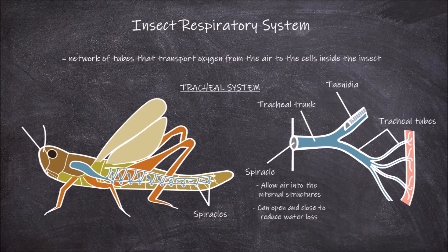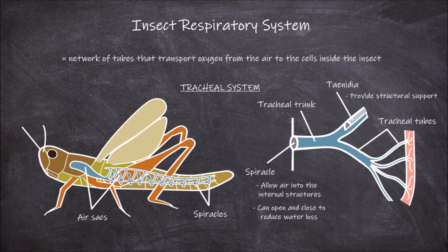The function of the taenidia is in providing structural support to the tracheal tubes to stop them from collapsing under the pressure of air moving through them. There are some areas lacking this structural support, which allows for the formation of air sacs off of the tracheal system. The function of these air sacs is to store air for later use by the insect.